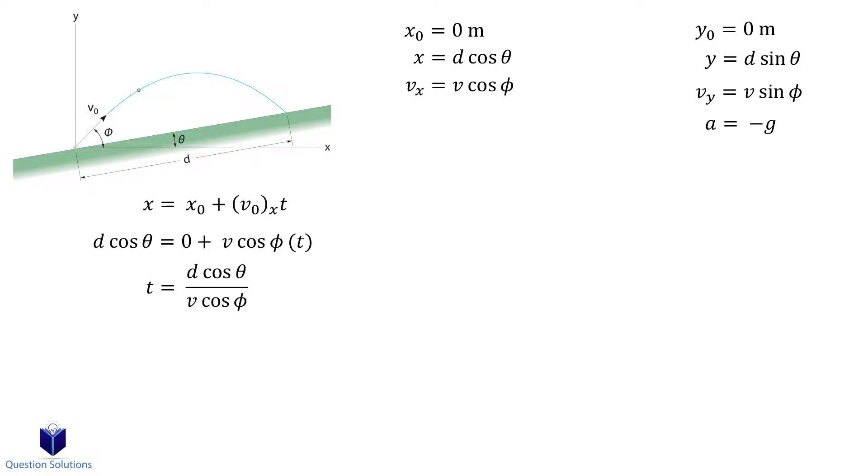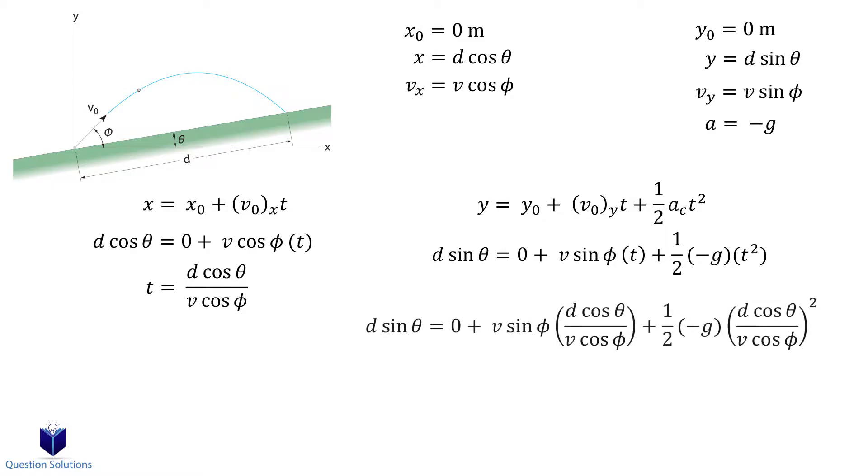For vertical motion, we can use this equation. And as before, let's substitute our values in. We can now substitute our first equation into this one. So let's replace t with equation 1. Now it's time to get this cleaned up and isolate it for d.